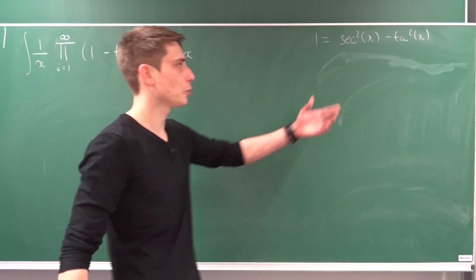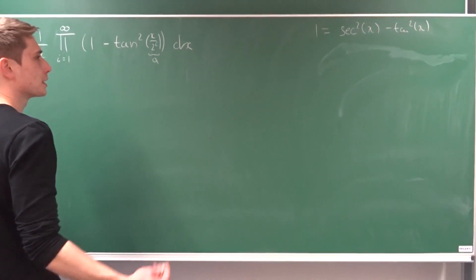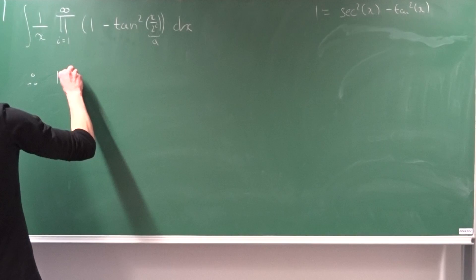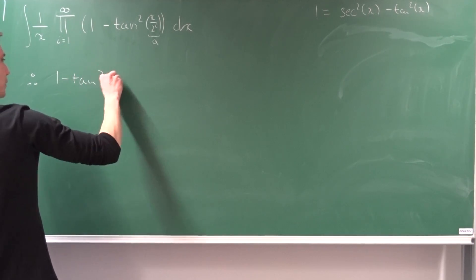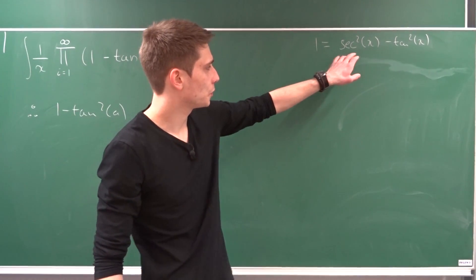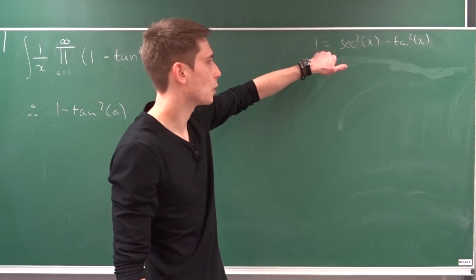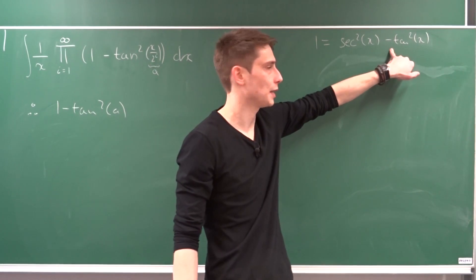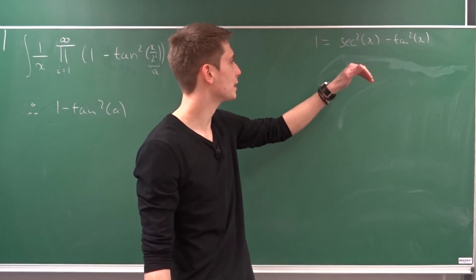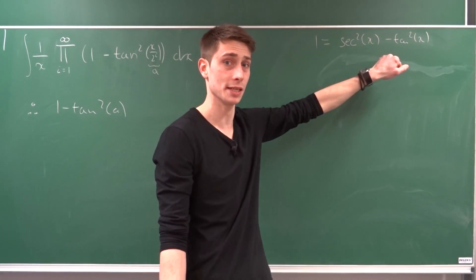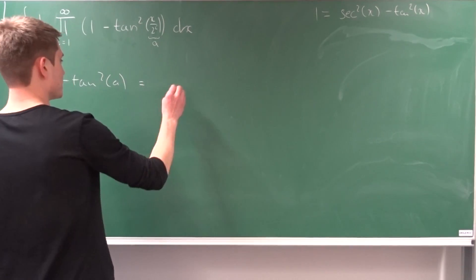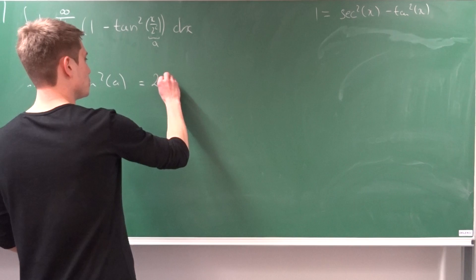I hope you know this formula and that it's true in general. Let's express one minus tangent squared a little differently. If we bring secant squared to the other side, we get one minus secant squared equals minus tangent squared, and then adding one on both sides, we get two minus secant squared equals one minus tangent squared — which is exactly what we want.